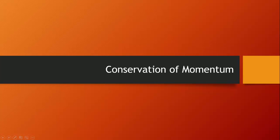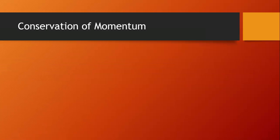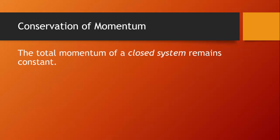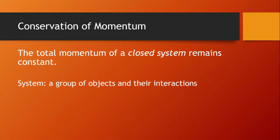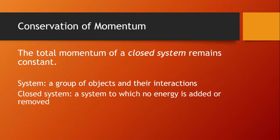This lesson is about conservation of momentum. The law of conservation of momentum states that the total momentum of a closed system remains constant. A system is just a fancy word for a group of objects and their interactions, and a closed system is a system to which no energy is added or removed.